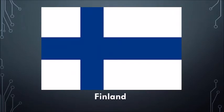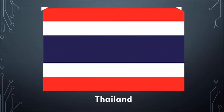This is Finland's flag with a white background and a blue Nordic cross symbolizing Christianity. And this is Thailand's flag. It has five horizontal rectangles. Two rectangles at the top and the bottom are red, two rectangles in the middle are white, with one blue rectangle in the center that is between the white rectangles.